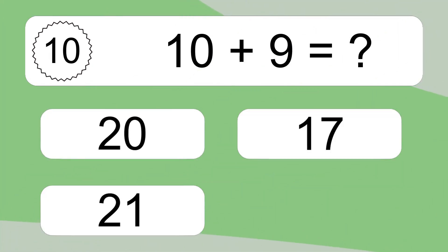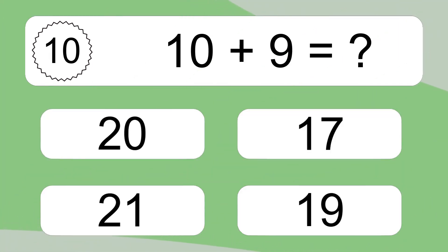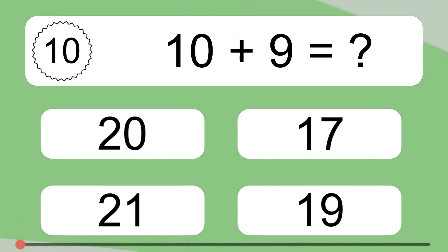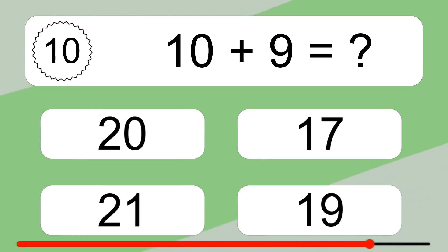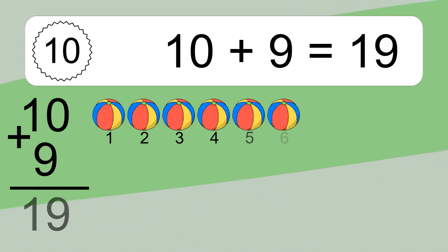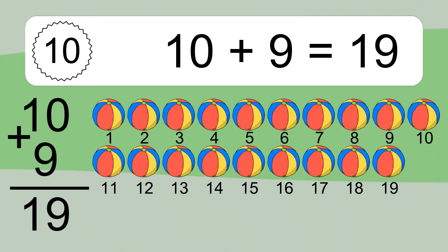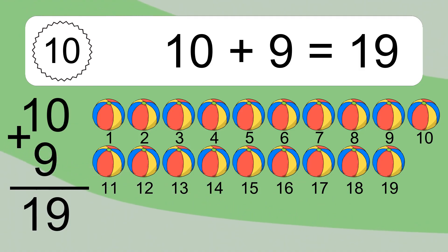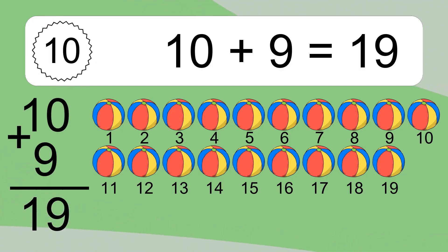Ten plus nine equals what? Ten plus nine equals nineteen. Let's count it: one, two, three, four, five, six, seven, eight, nine, ten, eleven, twelve, thirteen, fourteen, fifteen, sixteen, seventeen, eighteen, nineteen.